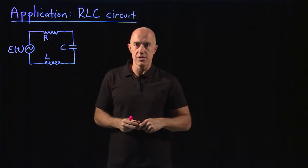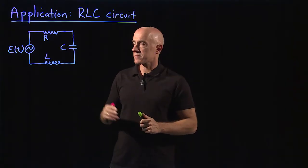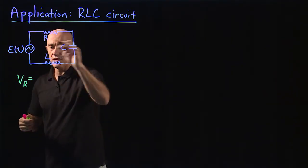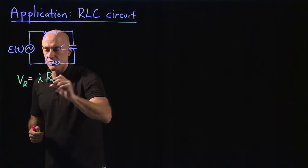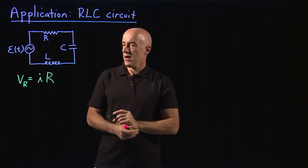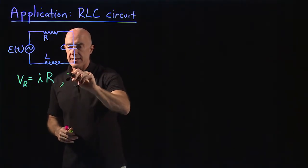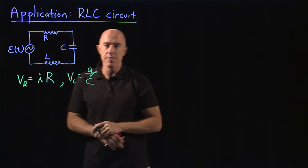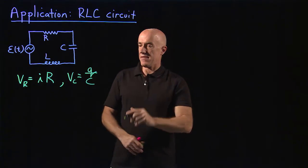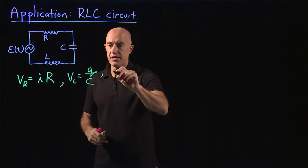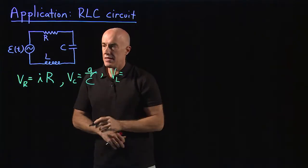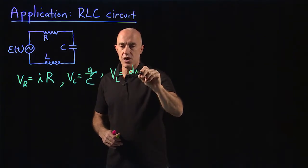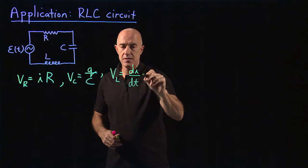So I will just write them down. The voltage drop across a resistor is equal to the current in the circuit times the resistance. The voltage drop across a capacitor is equal to the charge on the capacitor divided by the capacitance C. And the voltage drop across the inductor is equal to the derivative of the current with respect to time times L.